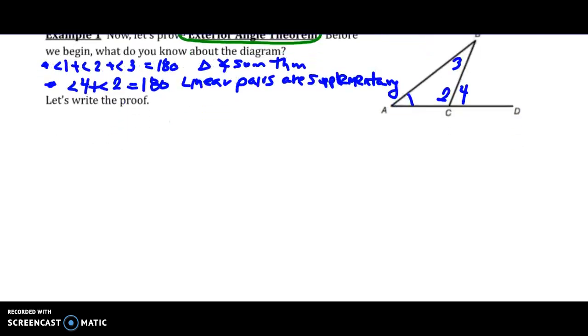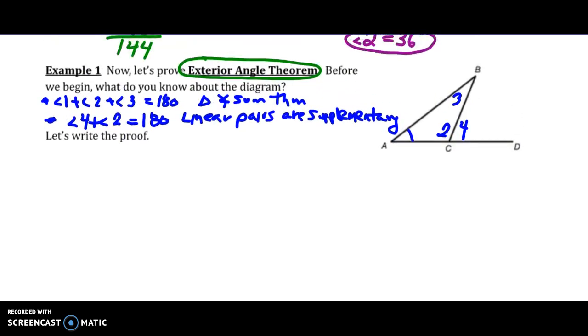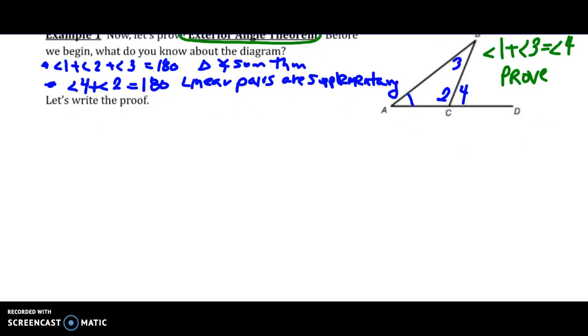So let's prove Exterior Angle Theorem, which basically means we are proving angle 1 plus angle 3 is equal to angle 4. That is what we're proving - that should be the last statement of our proof. So we need our two columns: one for our statements, our evidence, and one for our reasons why we're able to claim that evidence.